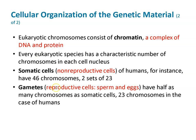Chromatin is the complex of DNA and protein. Somatic cells are non-reproductive cells — humans have 46 chromosomes, two sets of 23, but only 22 of those pairs are somatic cells. The 23rd pair are our sex chromosomes, X and Y. For gametes — our reproductive cells, sperm and eggs — these have half the number of chromosomes, because human beings have 46 chromosomes: 23 from mom and 23 from dad equals 46.